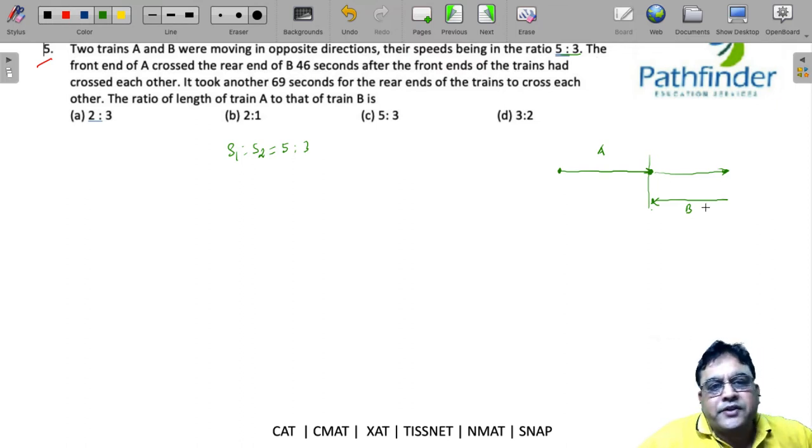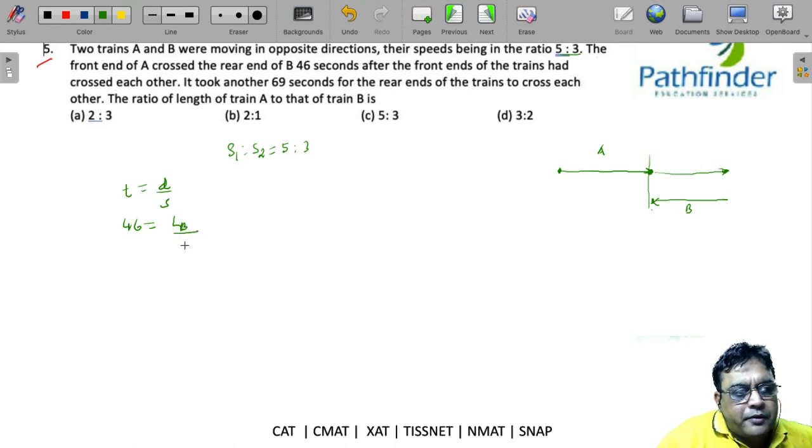So we know that time equals distance upon speed. So 46 must be equal to length of B upon the speeds. Now the speeds will be relative speeds of both because both are traveling in opposite directions. So I can say the relative speed is 5x plus 3x, that is 8x. So LB I can easily get 320 plus 48, 368x.